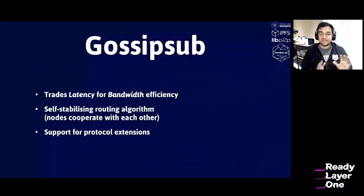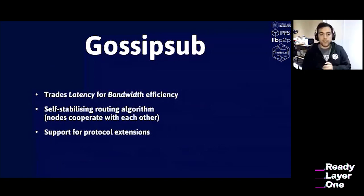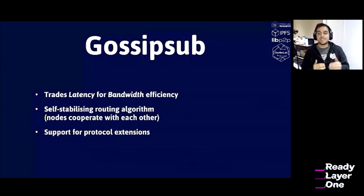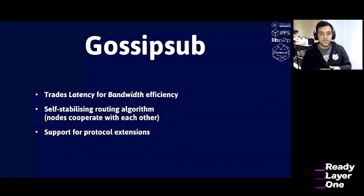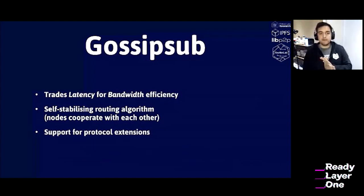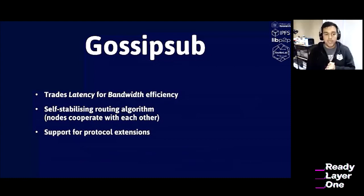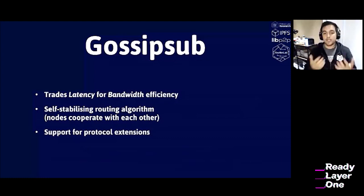This is where we get into GossipSub. GossipSub is a protocol that trades latency for bandwidth efficiency. Nodes cooperate with each other on a self-stabilizing routing algorithm to make sure that the network rebalances itself to provide the best delivery to every single node. It also supports protocol extension — GossipSub is not a final state, you can always add more things to it. GossipSub is actually a hybrid of two networks: nodes construct meshes for message propagation, and then use the remaining connections to spread metadata, which we call the gossip — hence the name GossipSub.